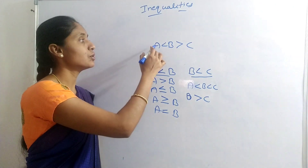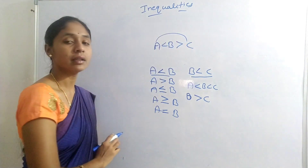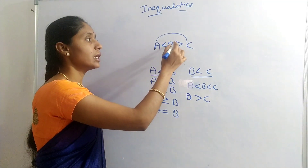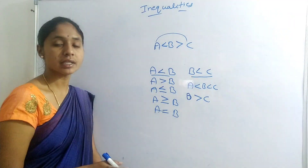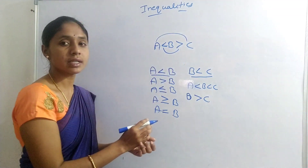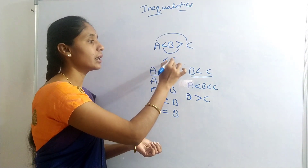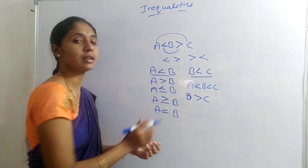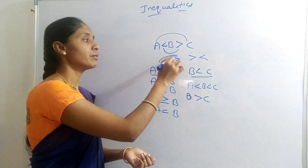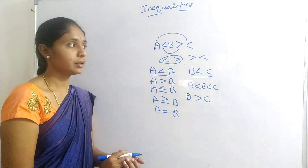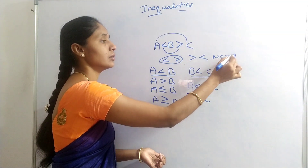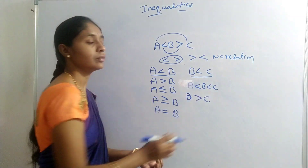The question is to find the relation between A and C. Here we can observe less than and greater than — opposite signs. Always remember: when we see opposite signs, that is less than/greater than or greater than/less than, we cannot find a relation between the two elements. This is the 'no relation' case.